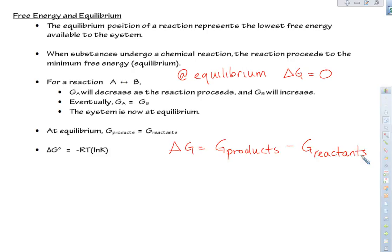This equation — products minus reactants — is in the packet, and you can use it for delta H, delta S, and delta G. Now, if we have a K value, an equilibrium constant, we can use that to predict if a reaction is going to be spontaneous under given conditions. Delta G° — that little degree sign means everything is under standard conditions — equals negative RT times the natural log of K.